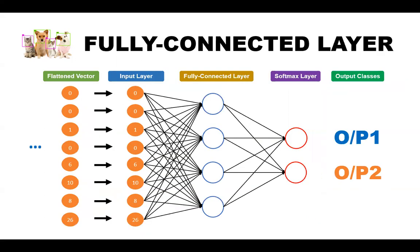The fully connected layer is where all the inputs from one layer are connected to every activation unit of the next layer. In most popular machine learning models, the last few layers are fully connected layers, which compiles the data extracted by the previous layers to form the final output.